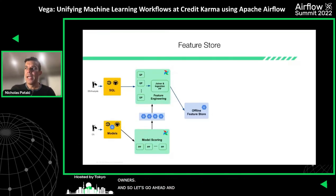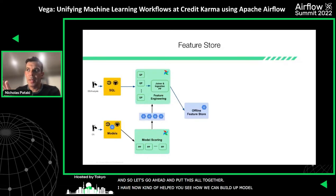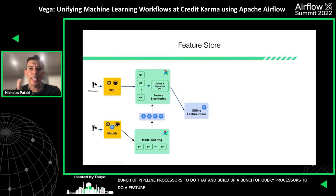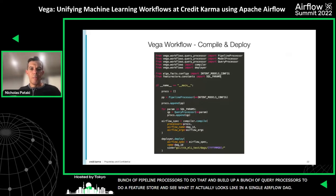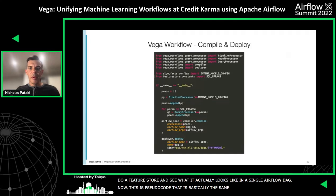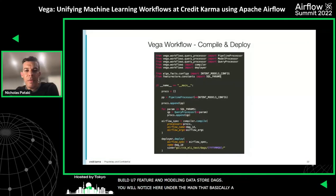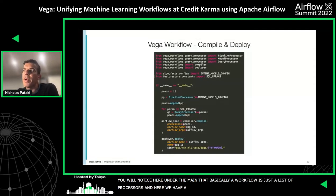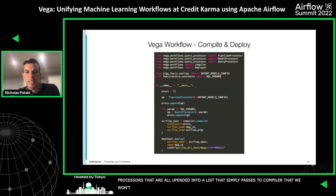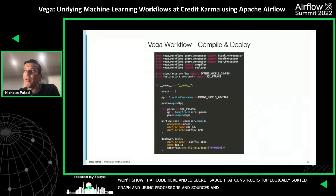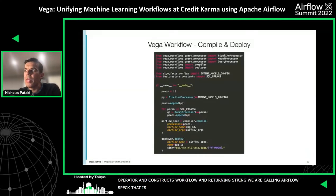Now let's put this all together. I've shown how we can build up model scores using Pipeline Processors, and build up a feature store using Query Processors. Let's see what this looks like in a single Airflow DAG. This is pseudo code but it really is basically the same Vega code and runner we use to build our feature and modeling data store DAGs. Under the main entry point, a workflow is just a list of processors — we've got a Pipeline Processor and a bunch of Query Processors, all appended into a list, and that's simply passed to a compiler. The compiler constructs the topologically sorted graph using all the processors, sinks, and sources, then translates each processor into the appropriate Airflow operator, constructs the workflow, and returns a string — what we call an Airflow spec. That is then simply sent up to a file system, whether remote or local, that an Airflow server can sync on.